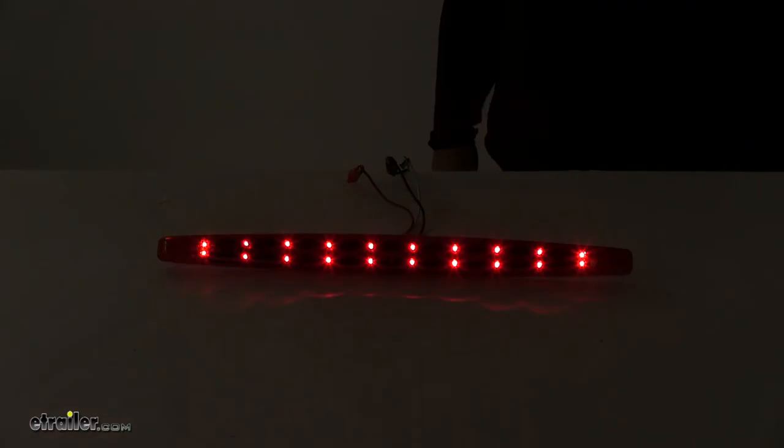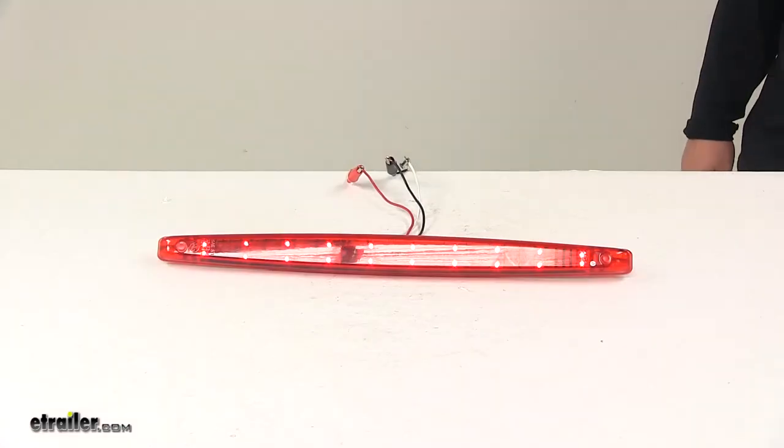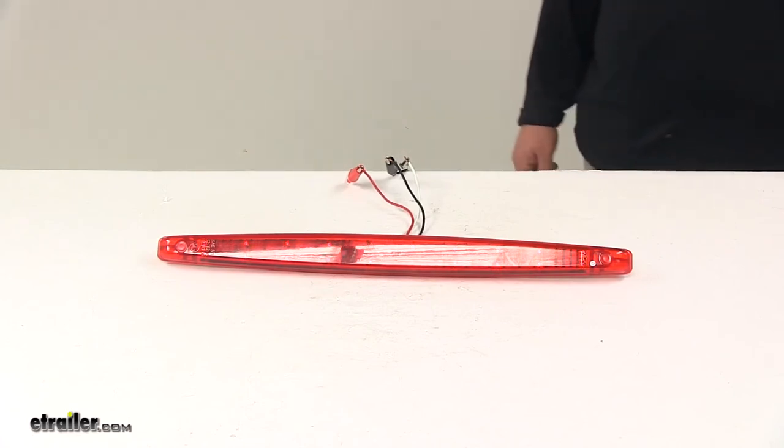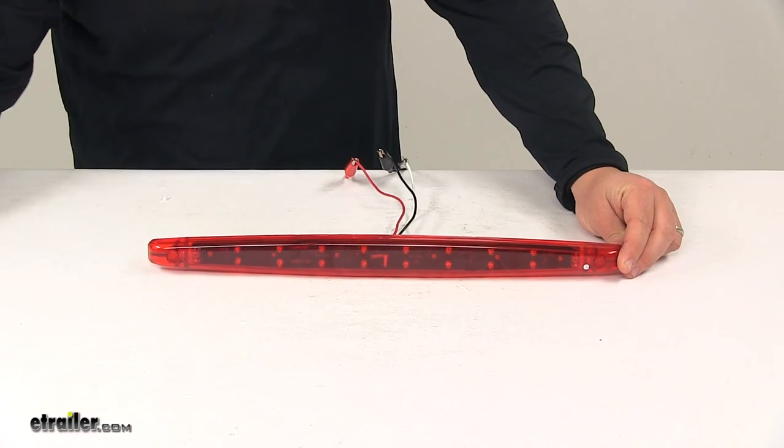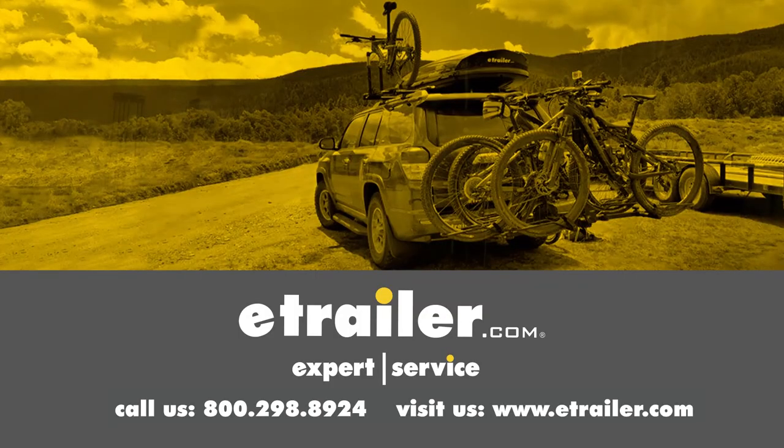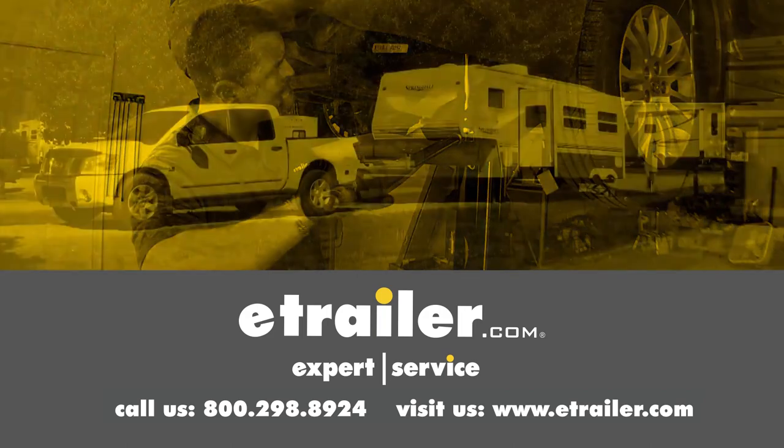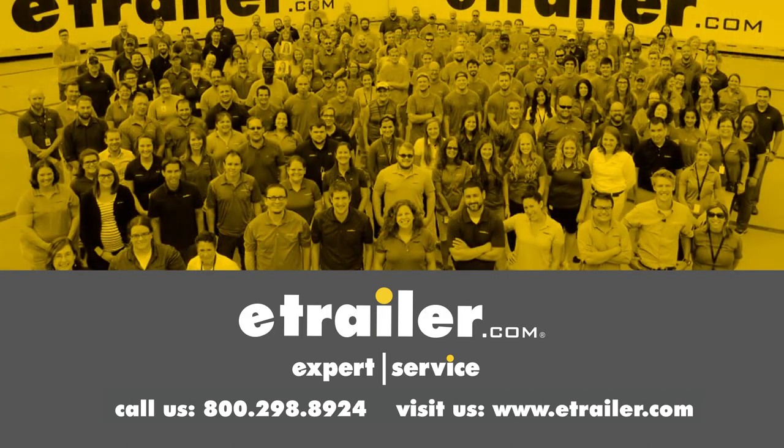And again, this light contains 20 diodes, so the multi-diode design really helps optimize the overall light output. And that's going to do it for today's look at the red LED trailer tail light. Thanks for watching. Click the link in our description below to shop, learn more, or visit us at eTrailer.com. And leave us a comment if you have any questions.